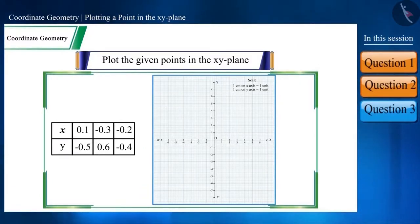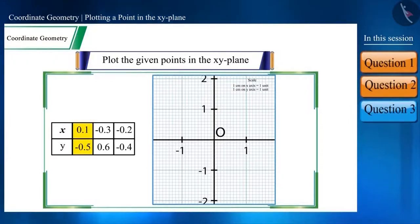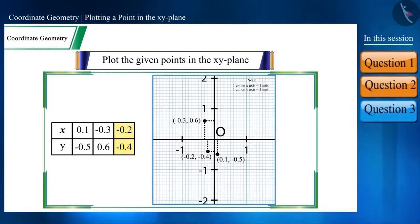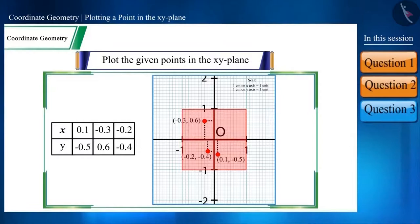Now let's plot the given coordinate points one by one. The first point (0.1, -0.5) will be plotted here. The second point (-0.3, 0.6) will be here, and the last point (-0.2, -0.4) here.